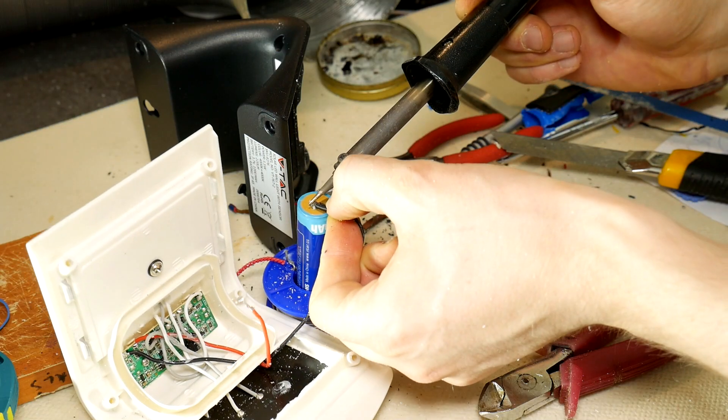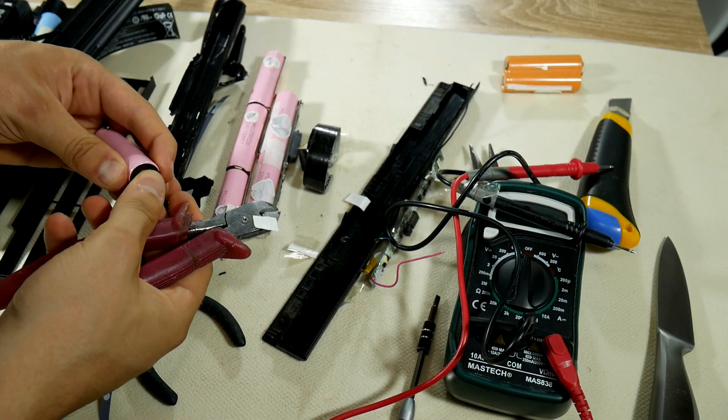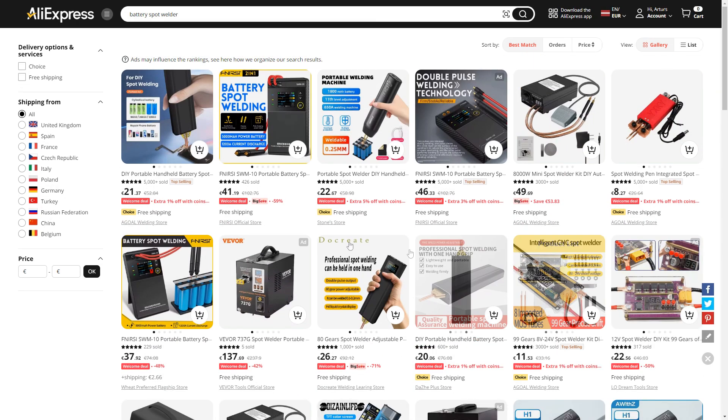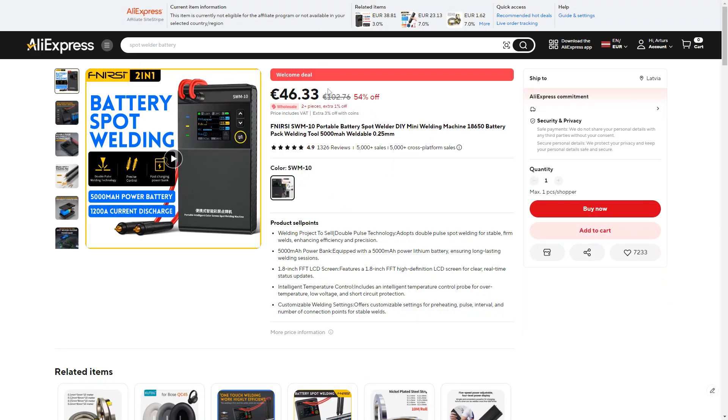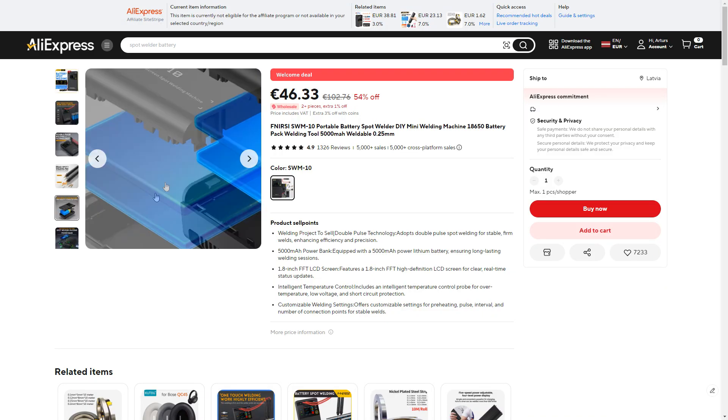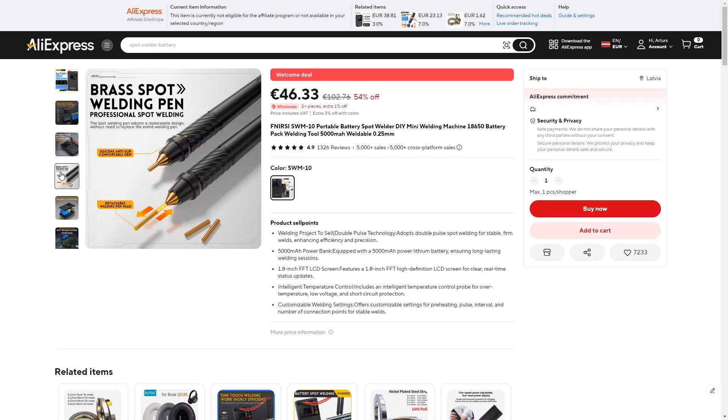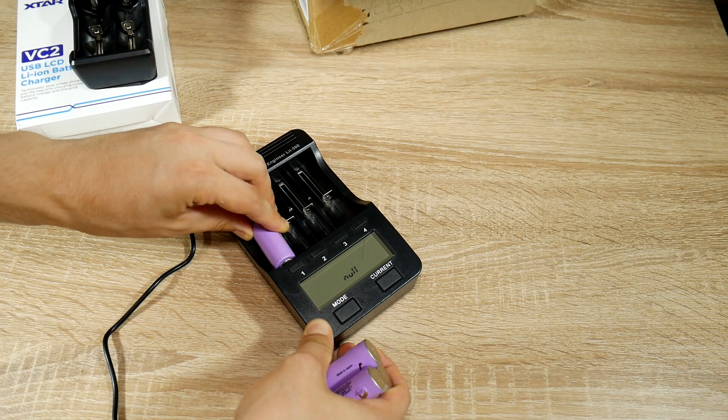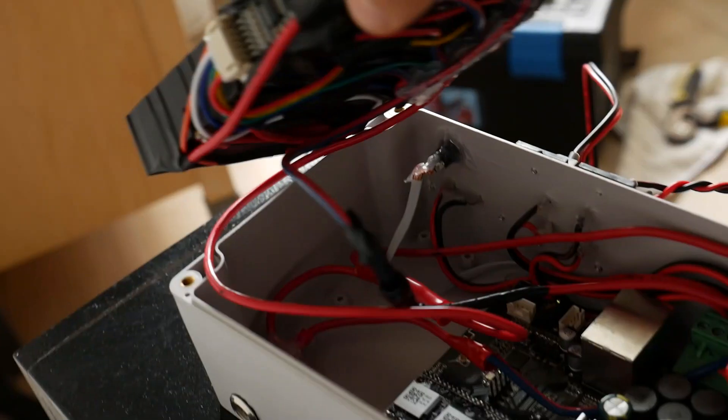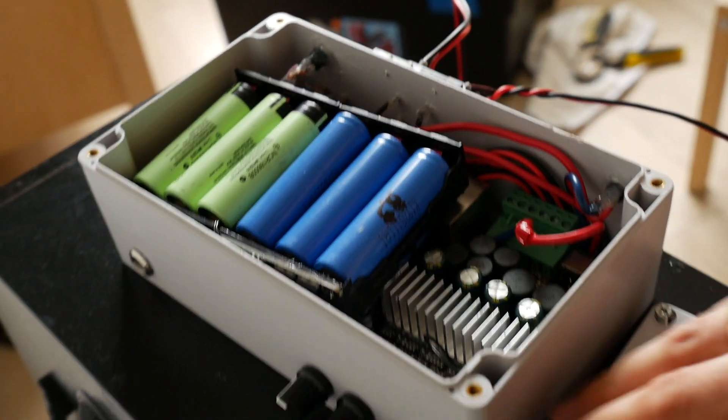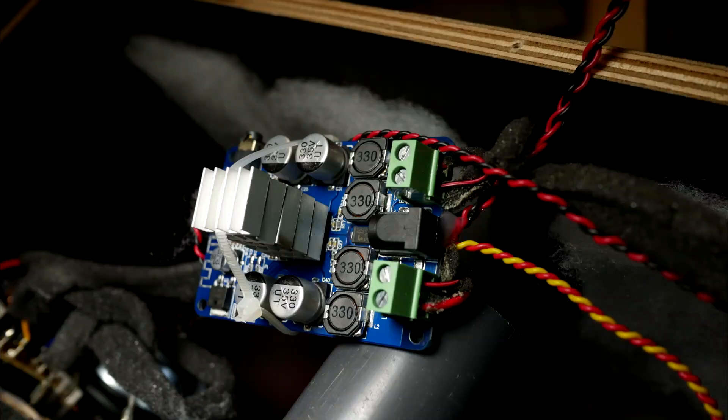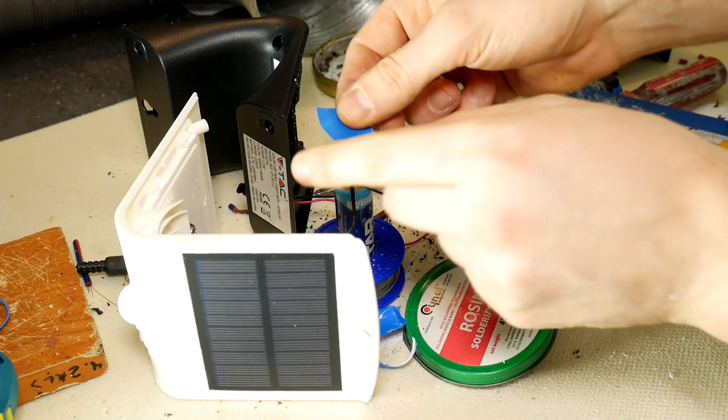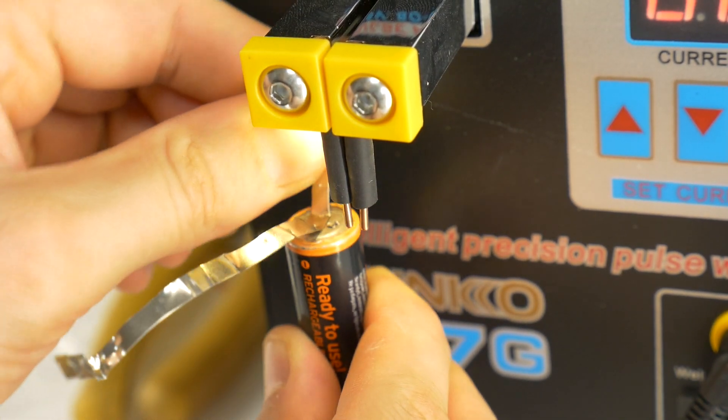Since I do DIY projects only a few times a year, I didn't want to risk buying a battery powered spot welder, because after one or two years it will be unusable since the battery inside will be dead. Spot welding requires high current power, which quickly damages batteries. So if you have one or two DIY projects, feel free to get a battery powered spot welder. But if you plan on using the welder for years, I would recommend going for an AC powered spot welder.